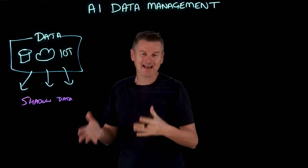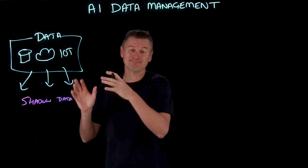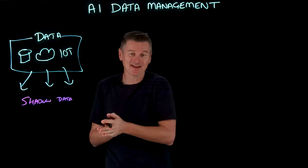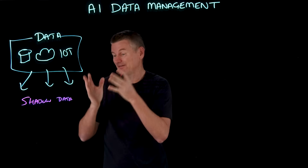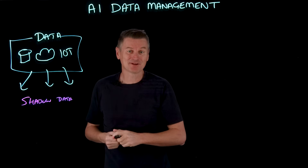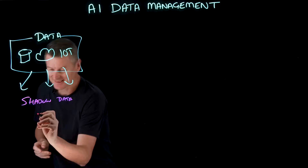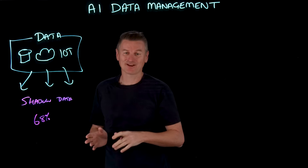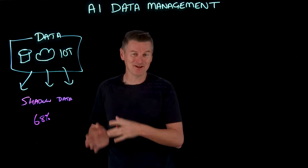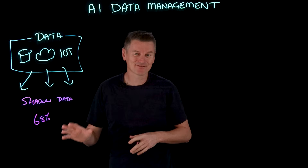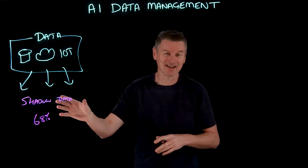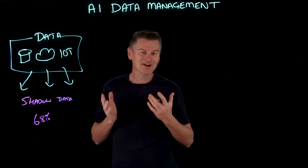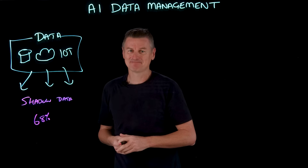Shadow data means data assets that an organization isn't managing, or might not even be aware of. If you can't see your data, you don't know where it is or even if it exists at all — there's not much you can do with it. In fact, it's estimated that 68% of an organization's data goes unanalyzed and therefore unused. That's two thirds of data that may be dark data, stored at cost but providing no value.